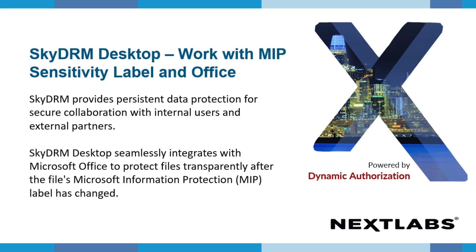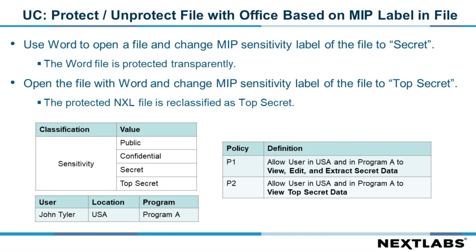SkyDRM Desktop seamlessly integrates with Microsoft Office to protect files transparently after the MIP Sensitivity Label of the file is changed. Let's start by reviewing the demo setup. We will first open a file with Microsoft Word to change the MIP Sensitivity Label to secret, and the Word file will be protected transparently. Then we will change the MIP Sensitivity Label to top secret, and the protected NXL file will be reclassified as top secret.